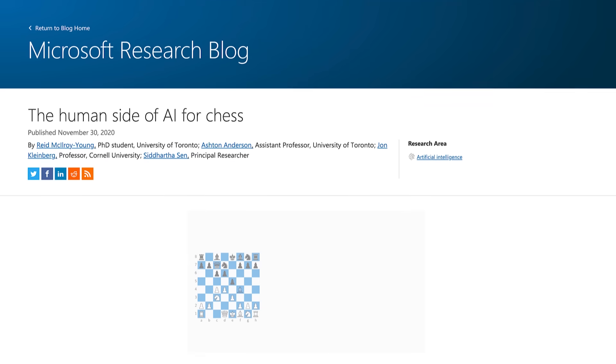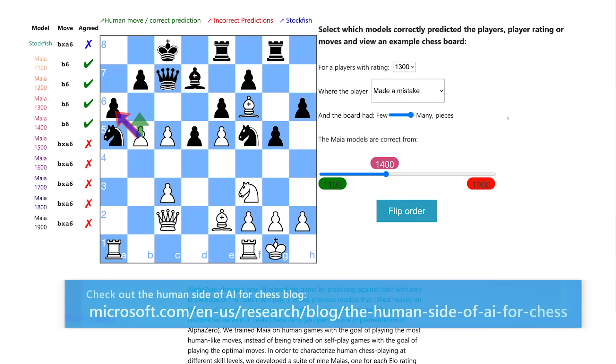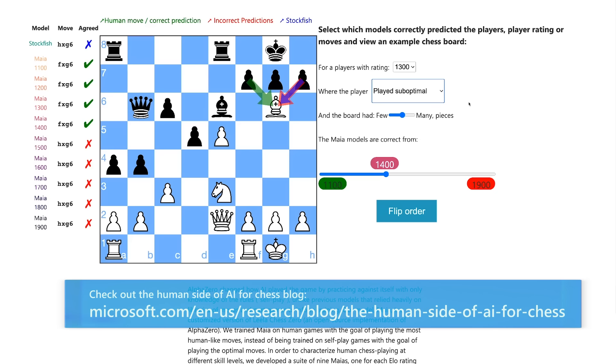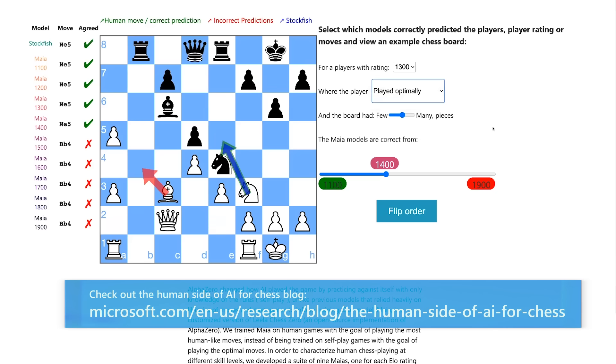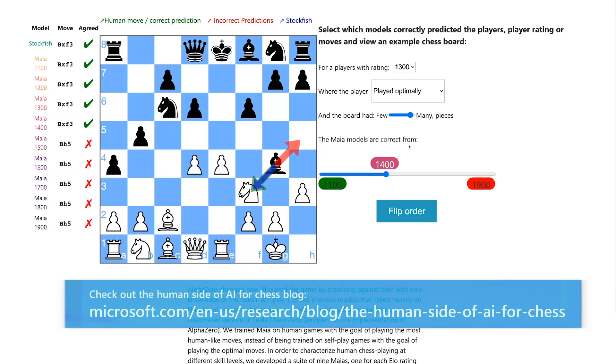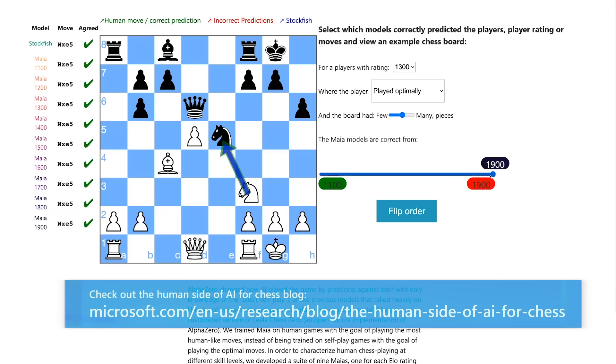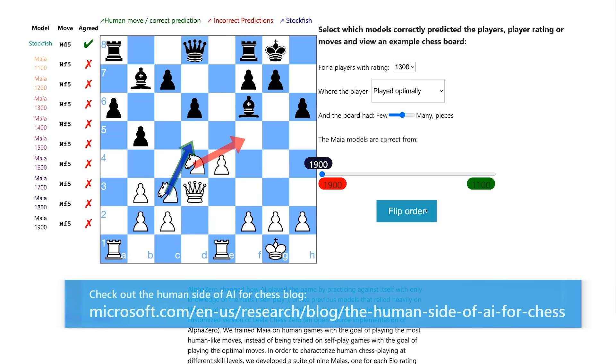And it's not just the fact that it achieves good accuracy, it's that it is able to achieve a different kind of accuracy depending on the level of the games that we train on. So we have developed a widget online. There's actually a part of a blog post that we have on the Microsoft Research blog, but it's also available on our Maya website where you can explore different board positions and look at what Maya at different skill levels would play in those positions and what an actual human played in those positions.